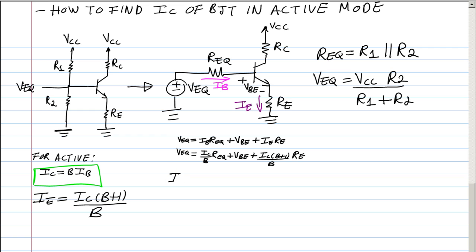That is going to give me IC equals to VEQ minus VBE over REQ over beta plus RE times beta plus one over beta.